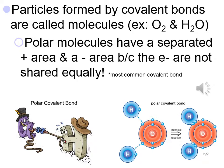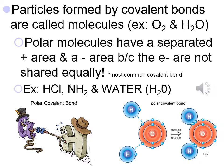A molecule of water is another example. Polar molecules have a separated positive and negative area because their electrons are not equally shared — this is the most common covalent bond. Hydrogen has a plus charge, chlorine has a negative charge, so plus charge plus negative charge equals a polar molecule. Water is the most common polar covalent molecule.